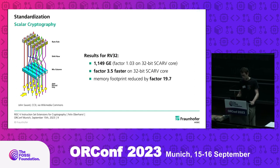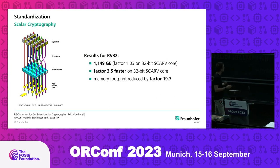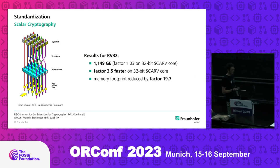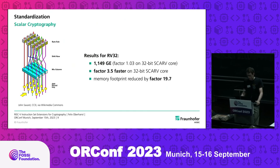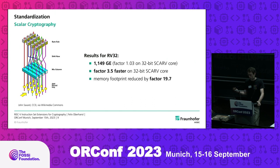What happens if you integrate this into a processor? Obviously, it means your processor gets bigger — but not by a lot. There was a benchmark done measuring an overhead of a bit more than 1,000 gate equivalences. For that cost, AES gets a lot faster than if you were to implement it with a standard RISC-V integer instruction set. And the memory footprint is even more impacted, because you merge a lot of instructions that you needed before into dedicated cryptography extensions.